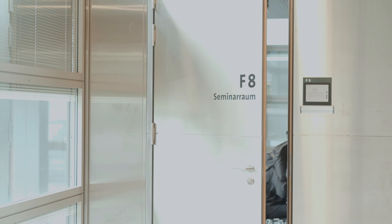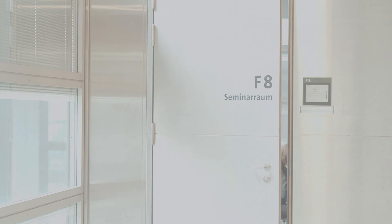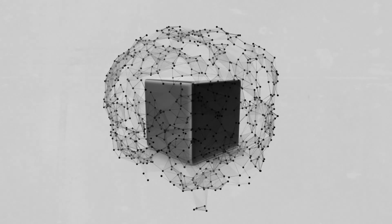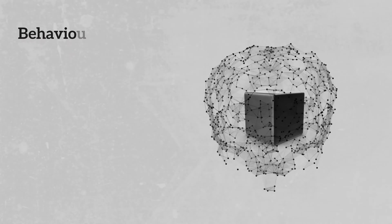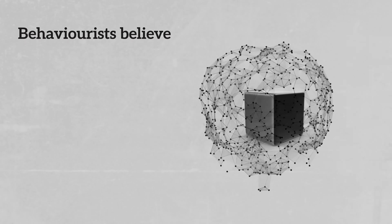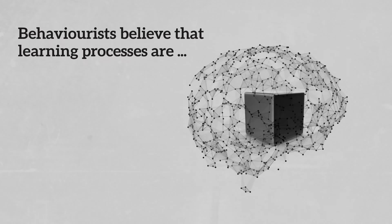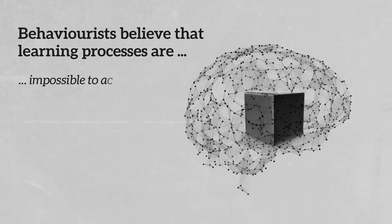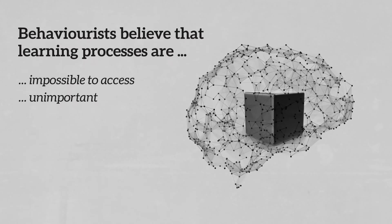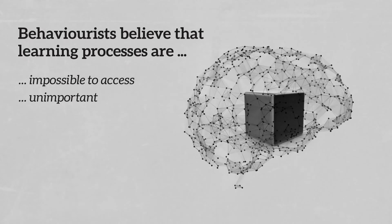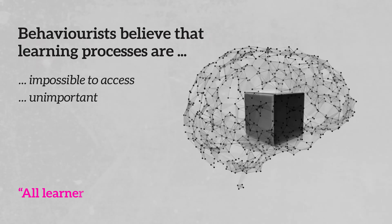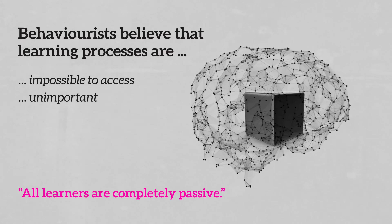But what are the learning sciences? Imagine a black box. That's how behaviourists would describe your brain. Behaviourists believe that learning processes going on in the human brain are impossible to access, and that they are unimportant. For them, all learners are completely passive.